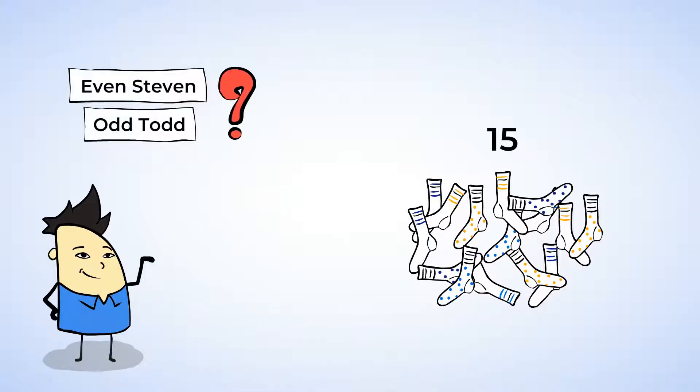this pile has 15 socks. Aha! Well, that could help us figure out whether it belongs to Even Steven or to Odd Todd. So, let's find out if this pile has an even number or an odd number of socks.